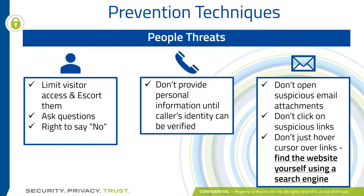Preventing people threats: should somebody come into the office, you can always ask them questions, tell them no, ask them to come back later, or call the office they say they're from to verify. Limit visitor access and escort them around the building — don't just let people wander around. With phone calls, don't provide your personal information until you know it's a legit call. With emails, don't open attachments and don't click on links. If it's in regard to one of your accounts, delete the email and go directly to Amazon, Google, or Apple and log in directly.